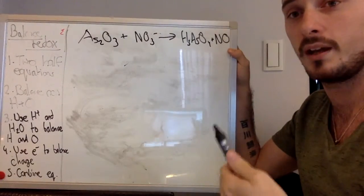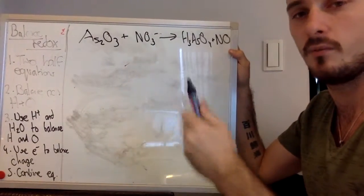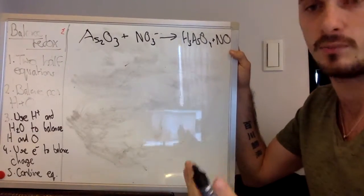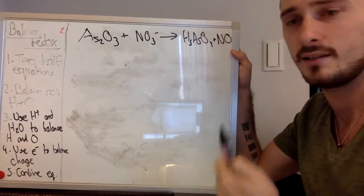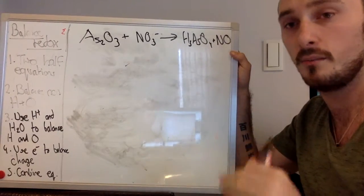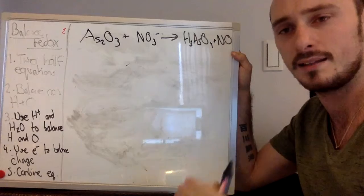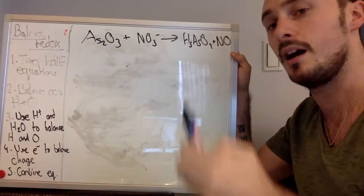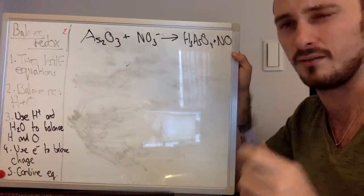So this means that we're going to have to bring in some other species to help make this reaction happen. And that other species is going to be water, and either H plus or OH minus. Now this is taking place in acidic media, so we'll start with H plus, but I will say that when you do a basic media redox reaction, you start with H plus as well, and then add OH minus later, and we'll get onto that when we do.